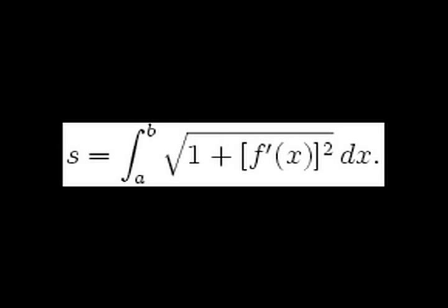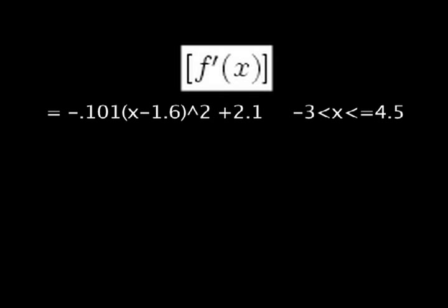Now, we can find the arc length. The arc length formula is the integral from a to b of the square root of 1 plus the derivative of f squared. First, we must take the derivative of f.